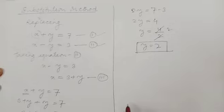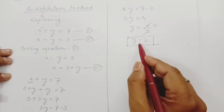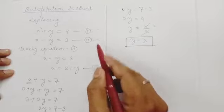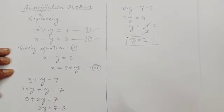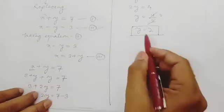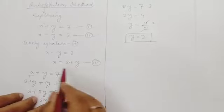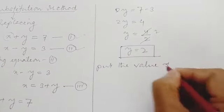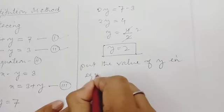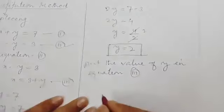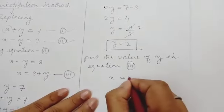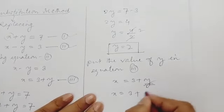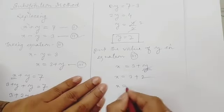We have found the value of y. Now we can put the value of y in any of the equations — equation 1, equation 2, or equation 3. But my suggestion is to always put the value in equation 3. So put y equal to 2 in equation 3: x equal to 3 plus y becomes x equal to 3 plus 2, so x equal to 5.